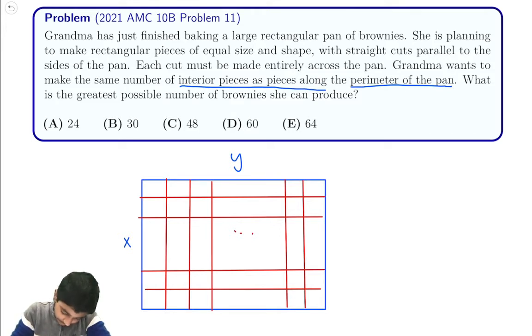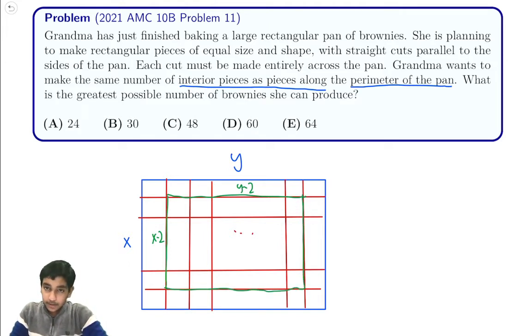This dimension here is going to be x minus 2. This dimension here is going to be y minus 2. So what is (x-2)(y-2)? We want to find that region.